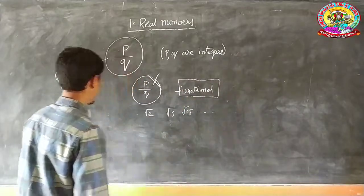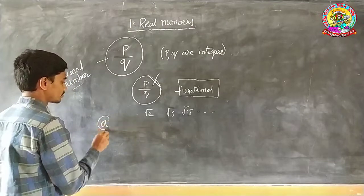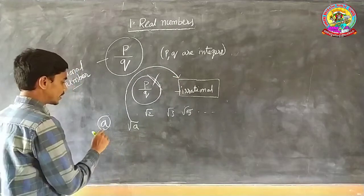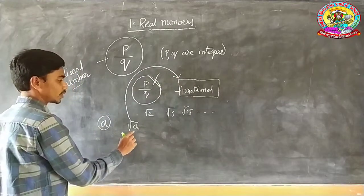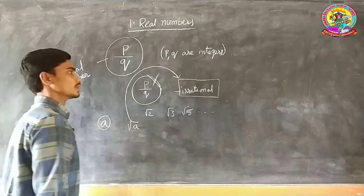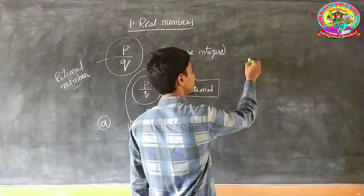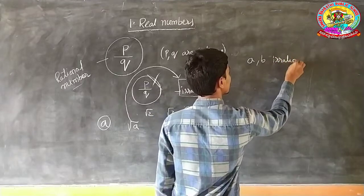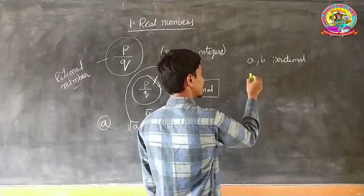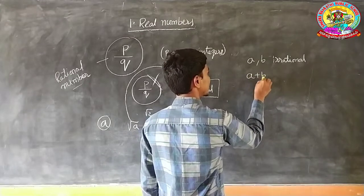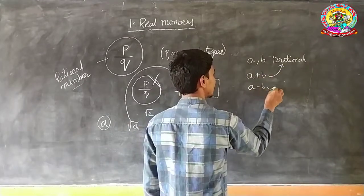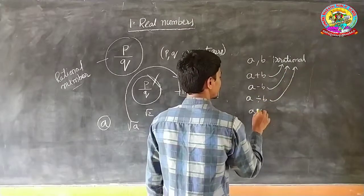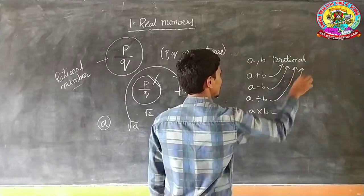Another rule: if A is a prime number, then root A is an irrational number. Also, if A and B are irrational numbers, then A plus B is an irrational number, A minus B is an irrational number, A divided by B is an irrational number, and A multiplied by B is also an irrational number.